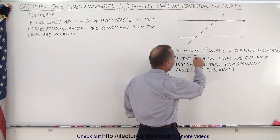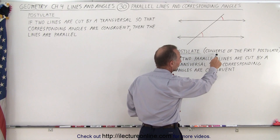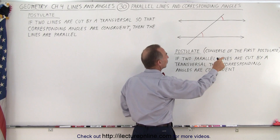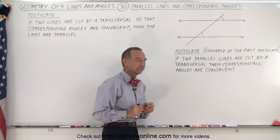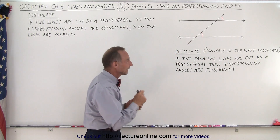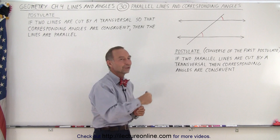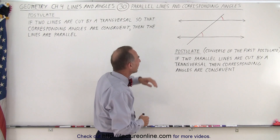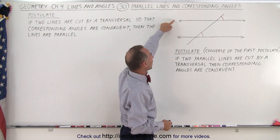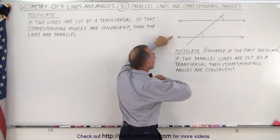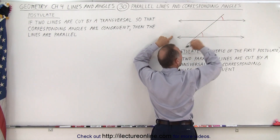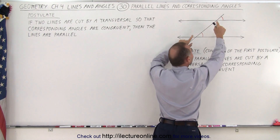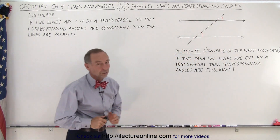Conversely, we have a second postulate — the converse of the first postulate. It says: if two parallel lines are cut by a transversal, then the corresponding angles are congruent. That one is probably more useful. If we know that two lines are parallel and a transversal cuts through them, then the corresponding angles are congruent.